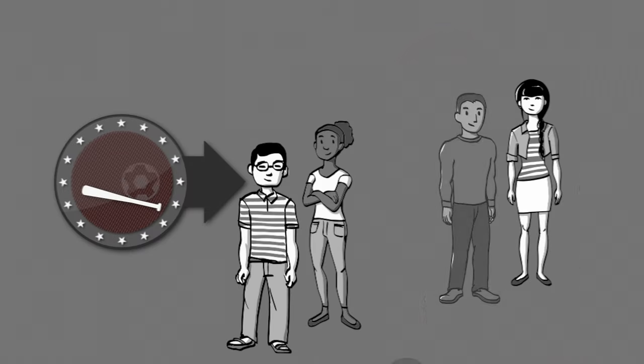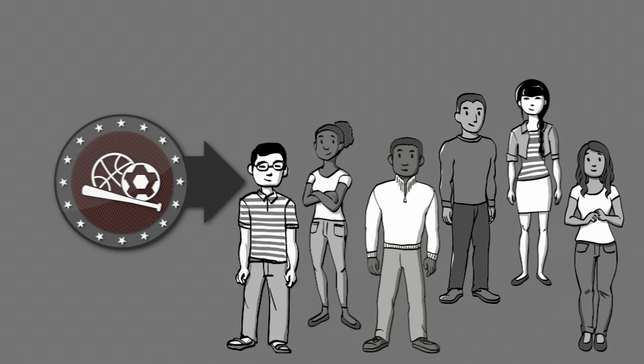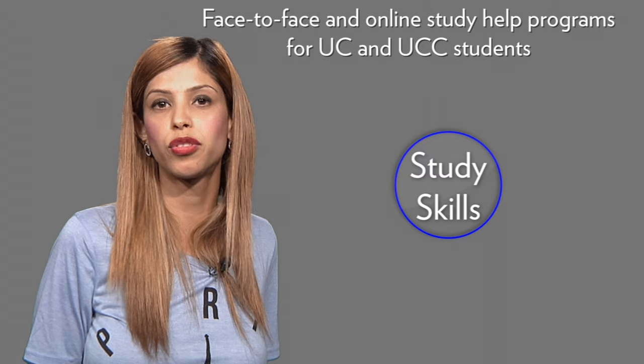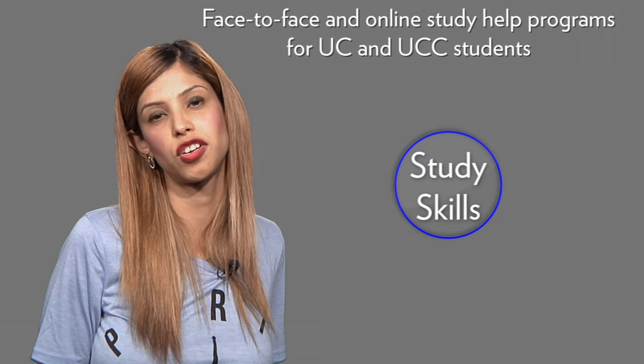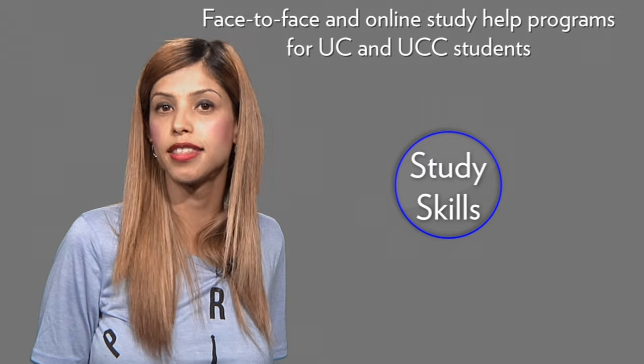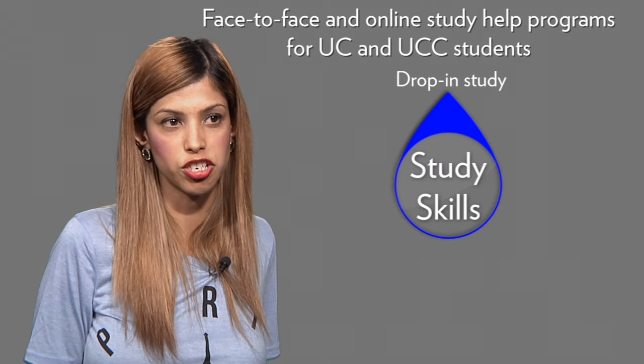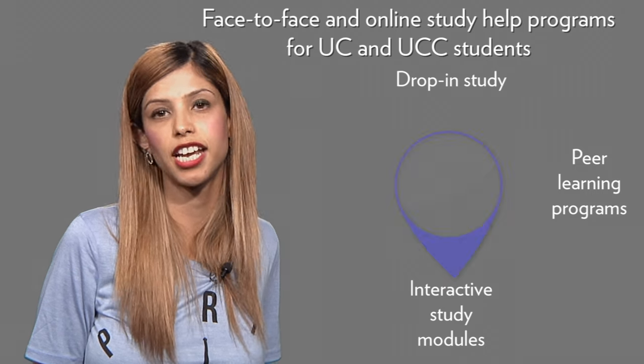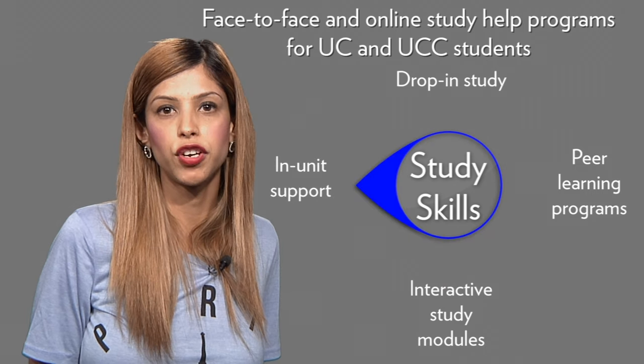Other specialised programs include the Elite Athlete Support Program, support for students from a refugee background, and the Residential Student Support Program. Study Skills provides a range of face-to-face and online study help programs for both University of Canberra and University of Canberra College students. These programs include drop-in study help sessions, peer learning programs, interactive study modules and in-unit help. If you are in need of academic help, head to the library and find a rover — they'll be wearing a polo with 'rover' on the back.